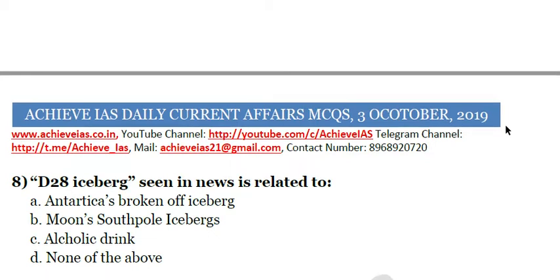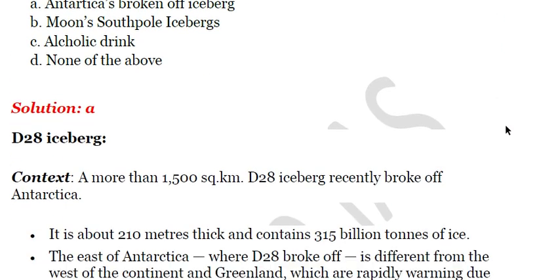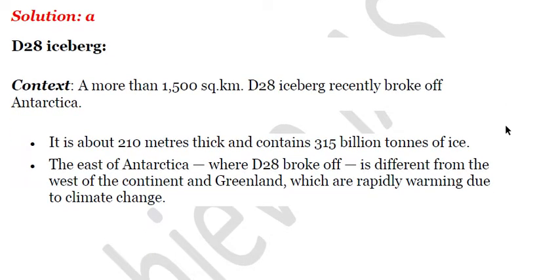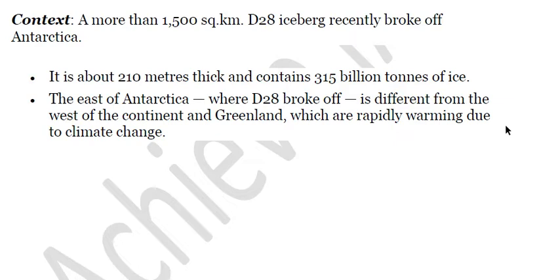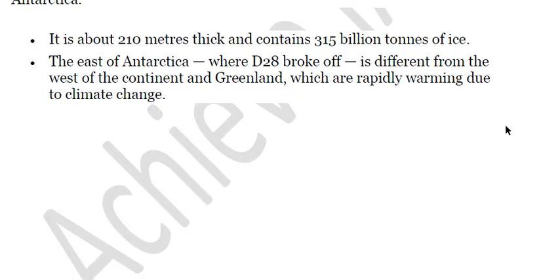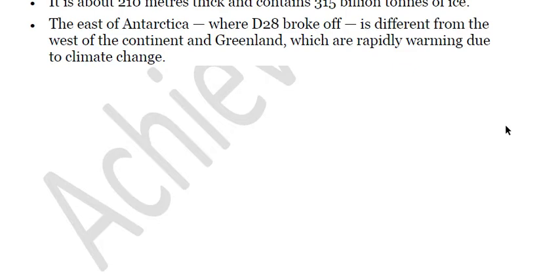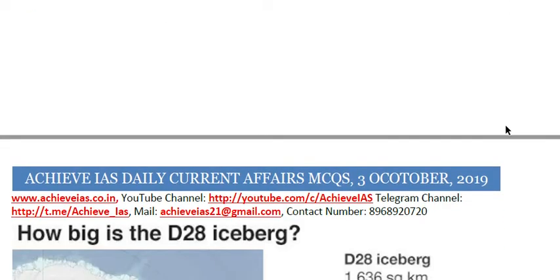Next, D28 iceberg, seen in news, is related to — A. Antarctica's broken-off iceberg, B. Moon south pole iceberg, C. alcoholic drink, D. none of the above. The correct answer is A. The D28 iceberg, more than 1,500 square kilometers in size, recently broke off Antarctica. It is about 210 meters thick and contains 315 billion tons of ice. The east of Antarctica where D28 broke off is different from the west of the continent and Greenland, which are rapidly warming due to climate change. This is a major cause of concern.